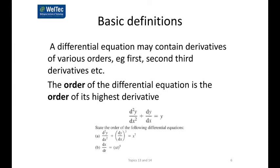We need to know the order of a differential equation. The order is the order of its highest derivative — not the power of the derivative, but which derivative it is. In the first example, the highest derivative is the second derivative, so the equation is of order 2 — we call it a second order equation. Another example has a cubic power on a term, but the highest derivative is still the second derivative, so it's again order 2. The third one has only the first derivative, so it's of order 1.